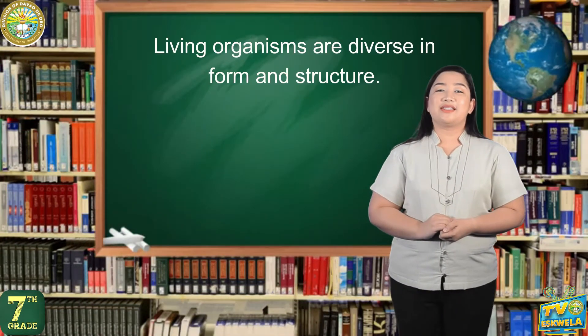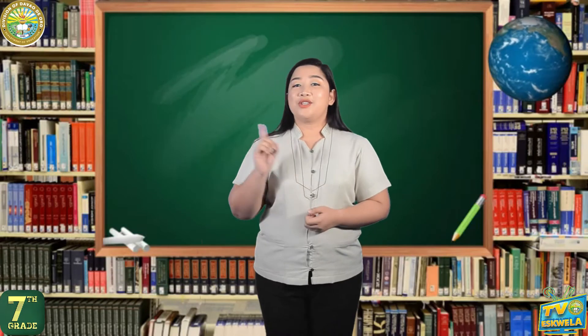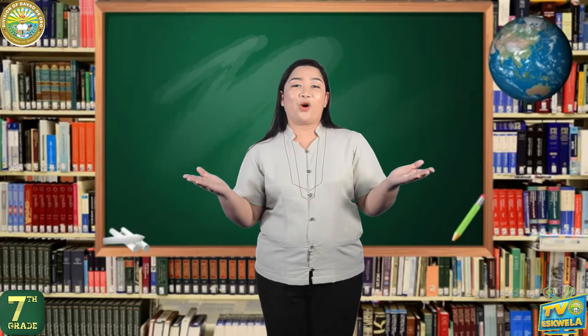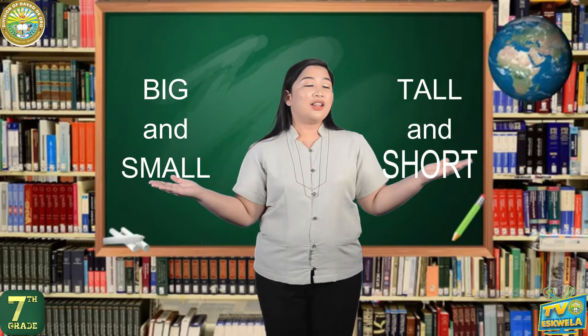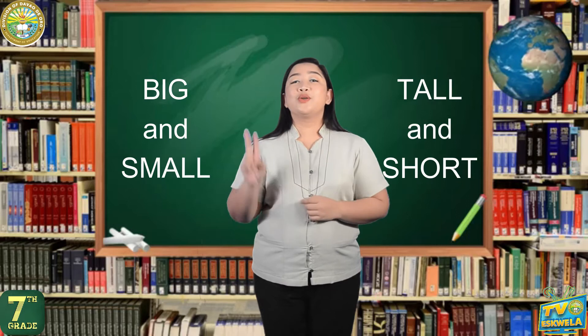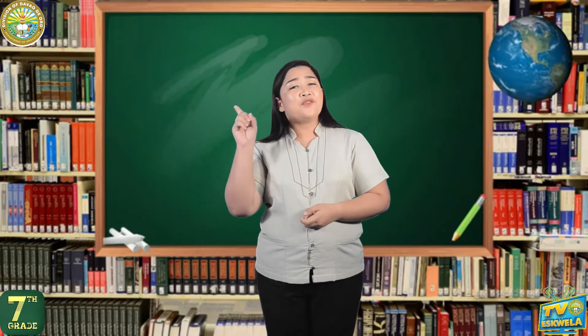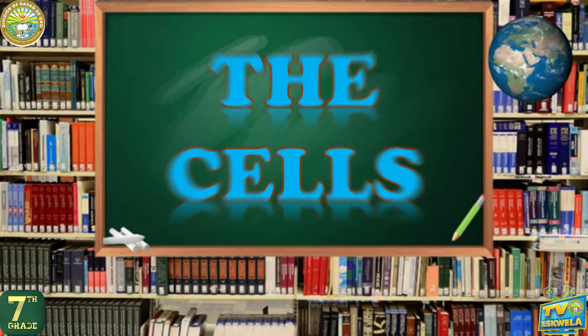Living organisms are diverse in form and structure. As you have observed around you, there are various kinds of organisms — big and small, tall and short, two-legged, and four-legged, and many others. Have you ever wondered what made them the way they are? This lesson will bring you to the world of tiny machines in living organisms: the cells.